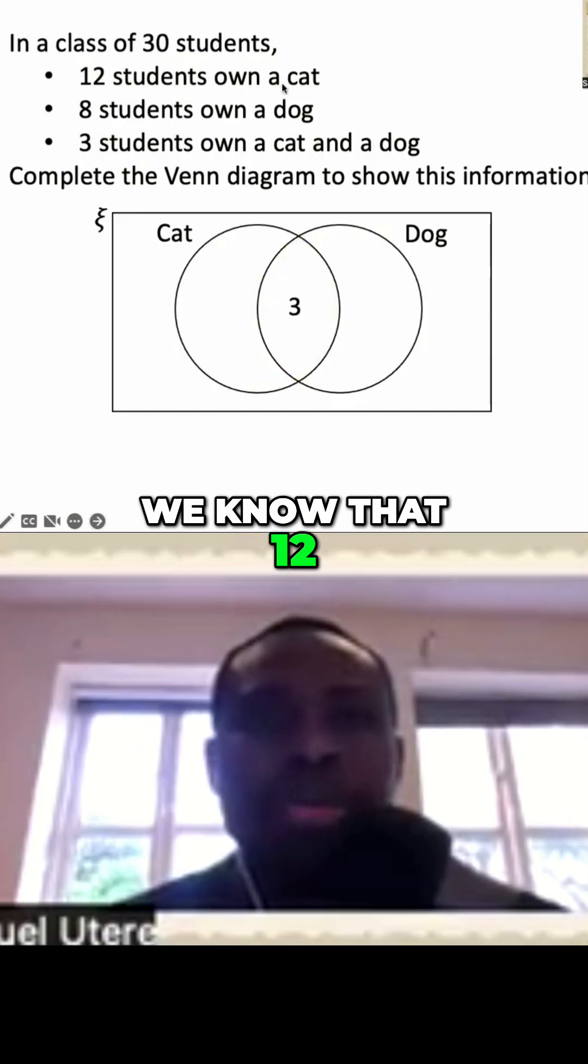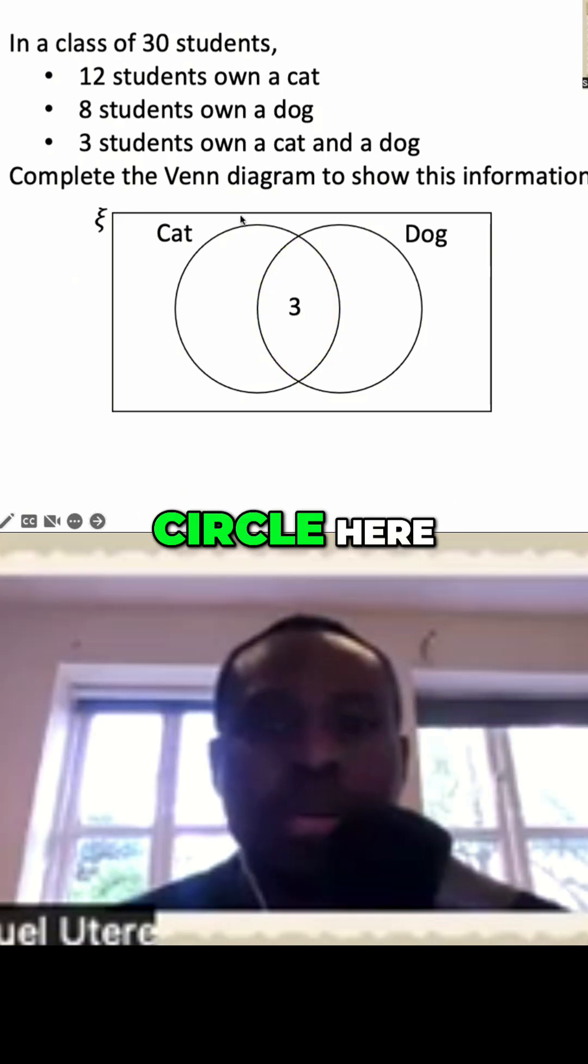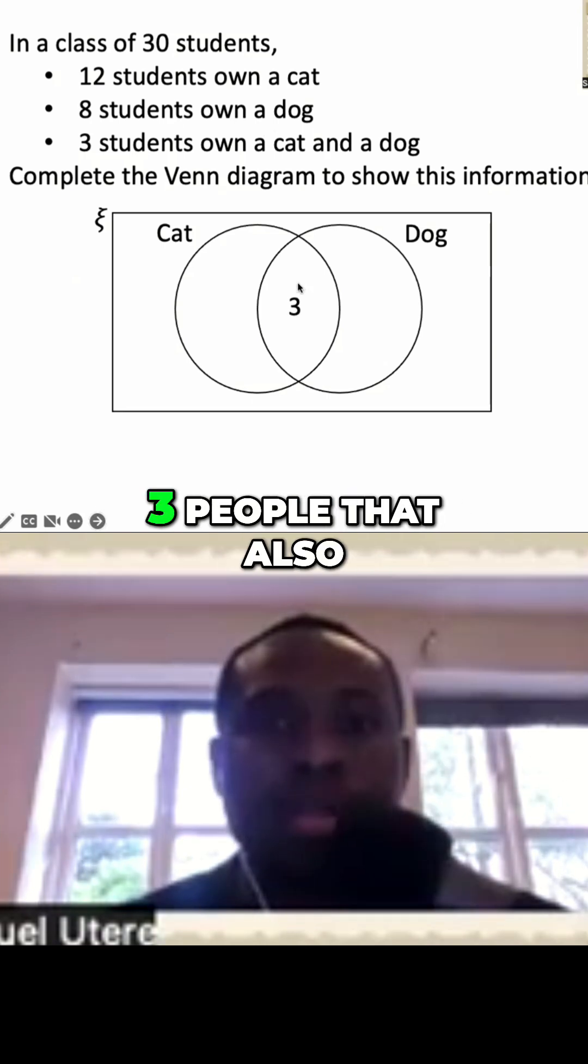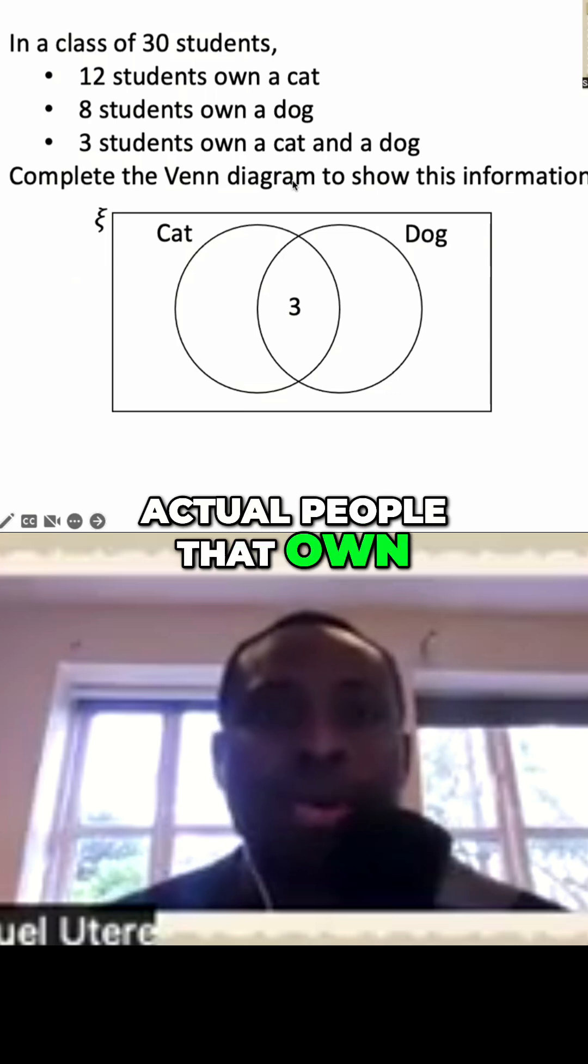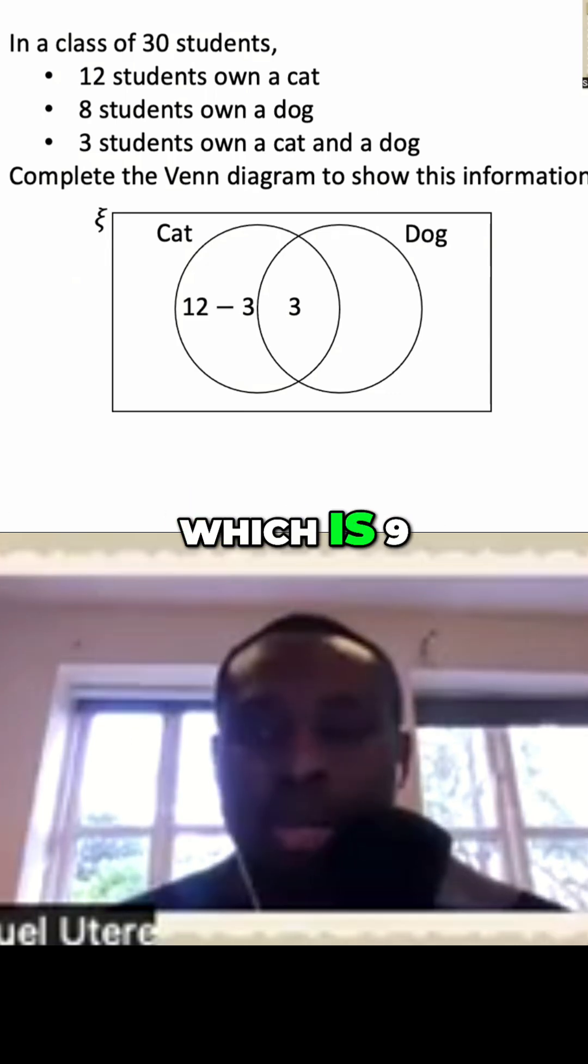Now we know that 12 students own a cat. So it's the whole circle here. But remember, this 12 includes these three people that also own dog. So to get the actual people that own only cats, we'll do 12 minus three, which is nine.